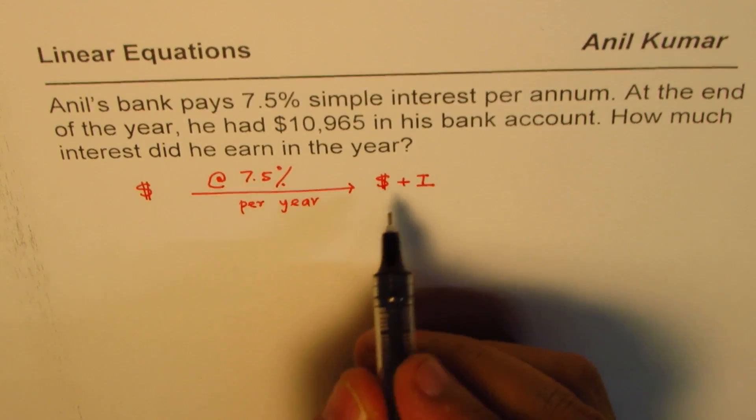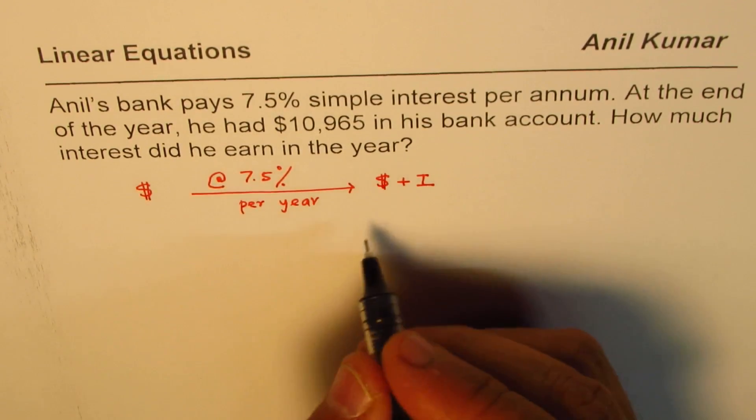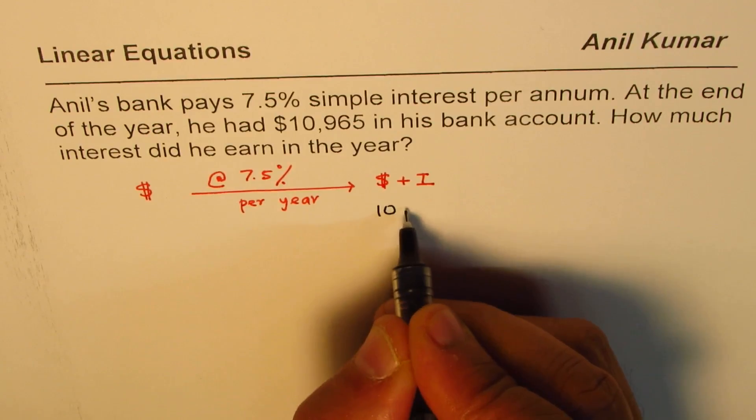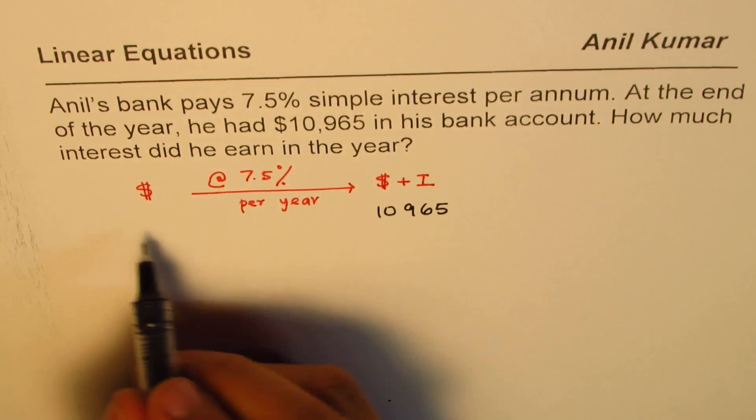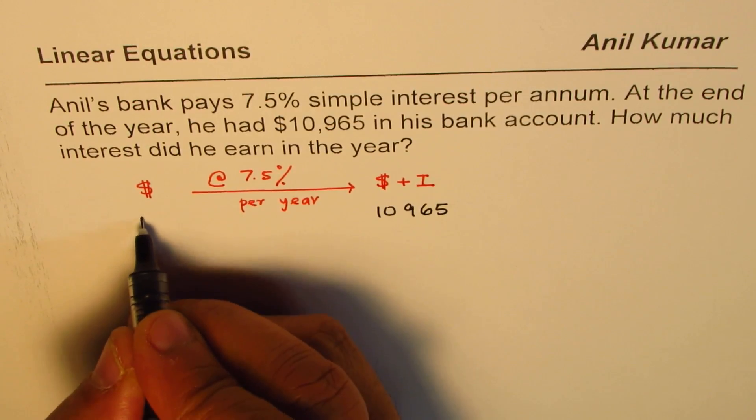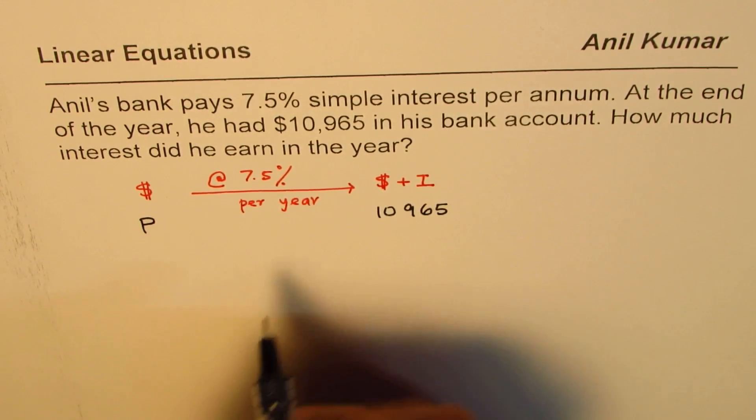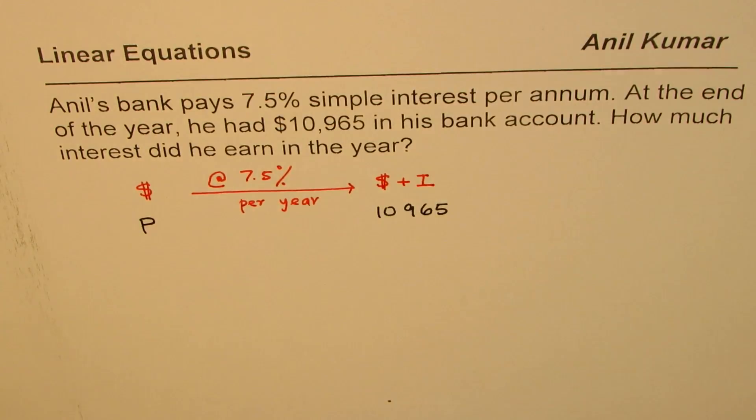Now, the question here is, we know the final amount. Final amount is $10,965 and we don't know what is the principal amount. So, we'll call this as principal amount P. That is what we will begin with.